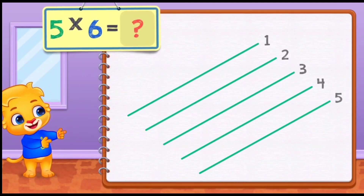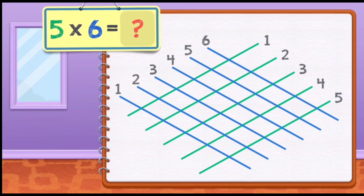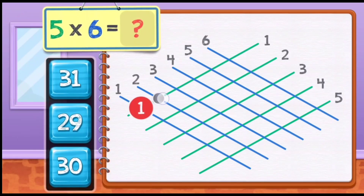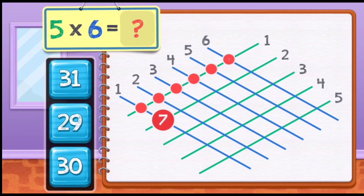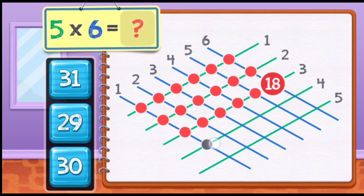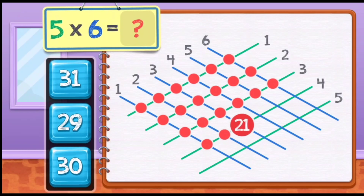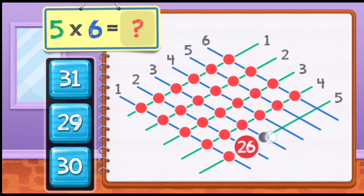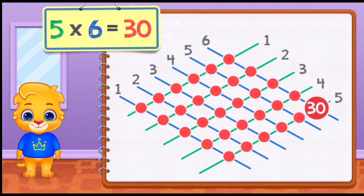Five times six equals: one, two, three, four, five, six, seven, eight, nine, ten, eleven, twelve, thirteen, fourteen, fifteen, sixteen, seventeen, eighteen, nineteen, twenty, twenty-one, twenty-two, twenty-three, twenty-four, twenty-five, twenty-six, twenty-seven, twenty-eight, twenty-nine. Five times six equals thirty.